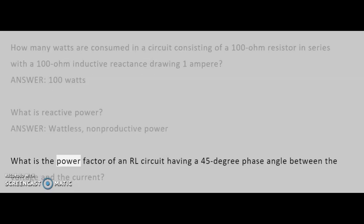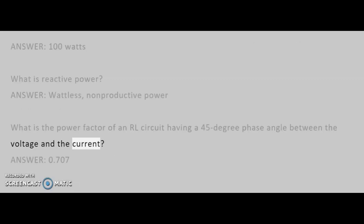What is the power factor of an RL circuit having a 45 degree phase angle between the voltage and the current? Answer: 0.707.